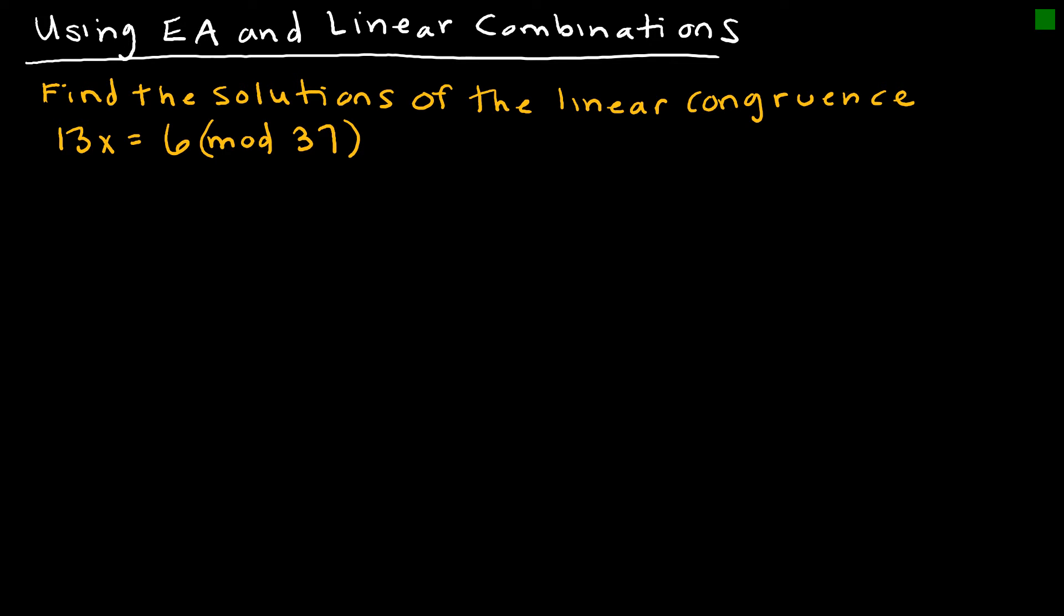So let's take a look at an example using the Euclidean algorithm and linear combinations. And this should look super familiar to us, because we've done this several times. But the first thing that I need to do is I need to show that the GCD, the greatest common divisor of 13, which is my A, and 37, has to be 1. Now, why does that have to be true? Because in our definition, we had said that the two values must be relatively prime, which means their greatest common divisor needs to be 1. So how can I show that? I can show that using Euclidean's algorithm.